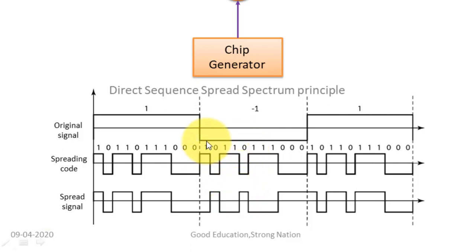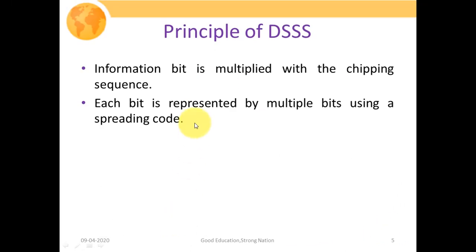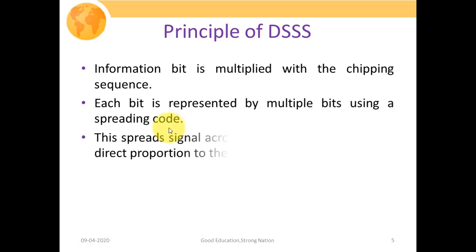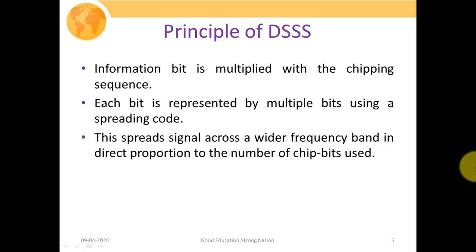For plus 1 multiplied with minus 1, we get minus 1; then minus 1 multiplied with minus 1 gives plus 1. This is how the spreading signal looks. The information bit is multiplied with the chipping sequence, and each bit is represented by multiple bits using the spreading code. The spread signal spans a wider frequency band in direct proportion to the number of chips per bit used — a larger number of chipping sequences expands the signal more.